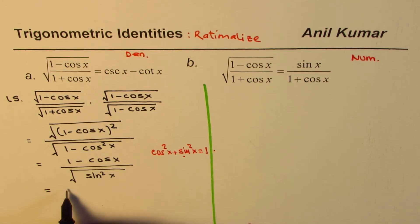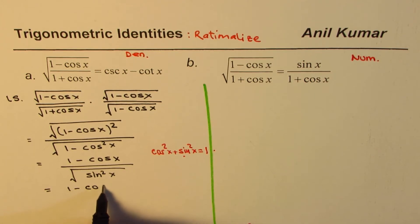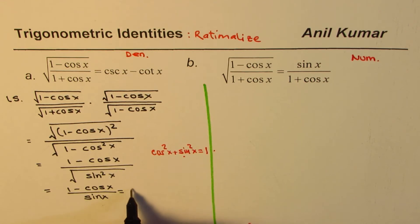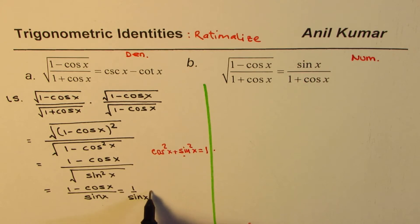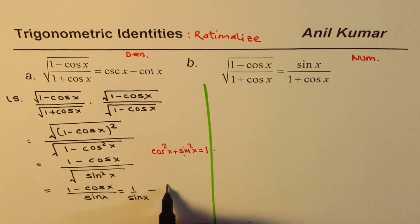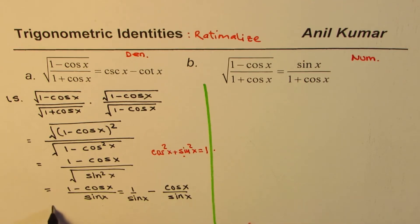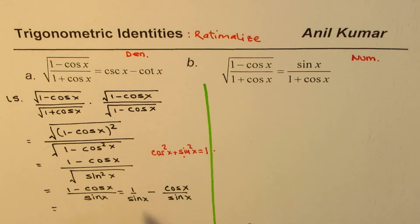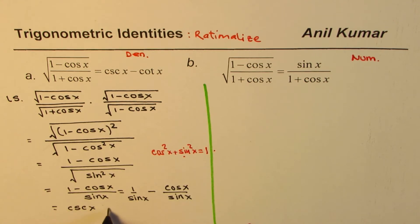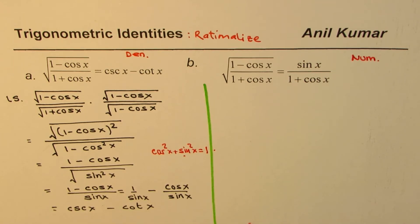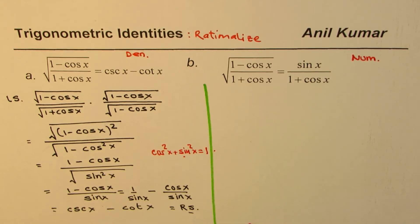This results in (1 minus cos x) divided by sin x. Splitting the fraction gives 1 over sin x minus cos x over sin x, which is exactly what we need. 1 over sin x is cosecant x, and cos x over sin x is cotangent x. So we got the right side, and this identity has been proven.